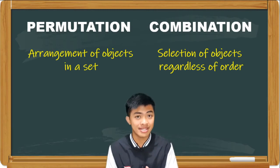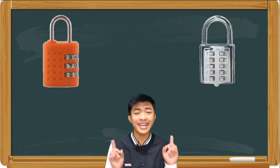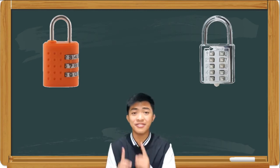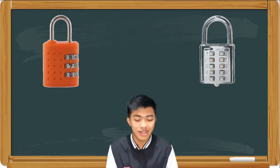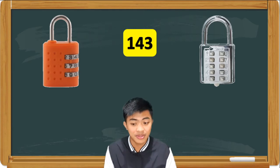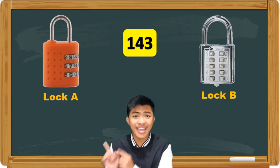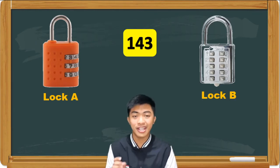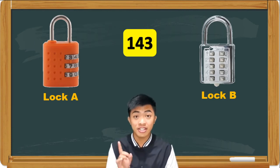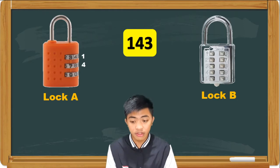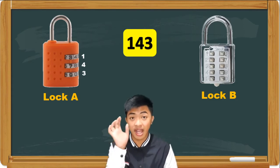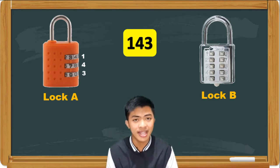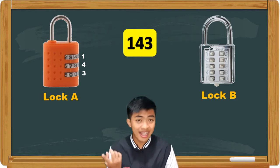But let's have an example to better understand them. So you might have seen these locks before. One of them is a permutation lock and the other one is a combination lock. Let's say the passcode of both locks is 143. For Lock A, if we input that passcode, we have to follow the arrangement of numbers — 1 in the first slot, 4 in the second slot, and 3 in the third slot. The numbers must be arranged correctly; otherwise, it won't unlock. So Lock A has arrangement.